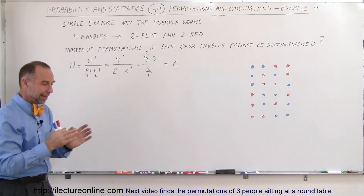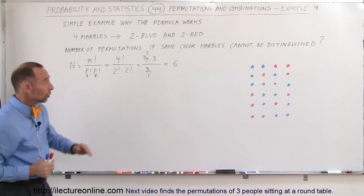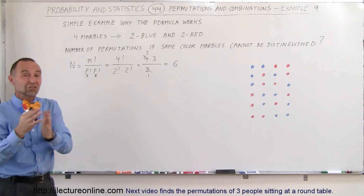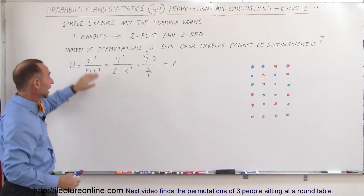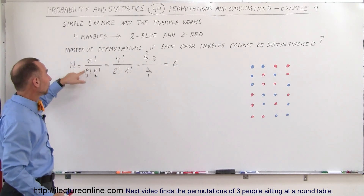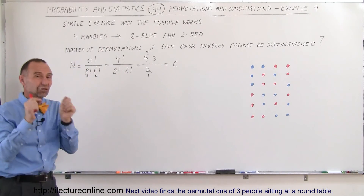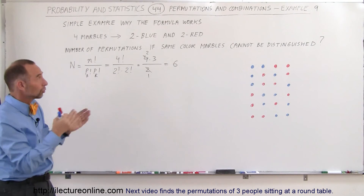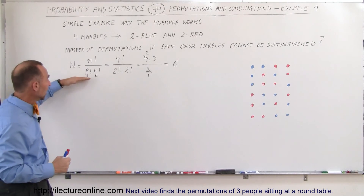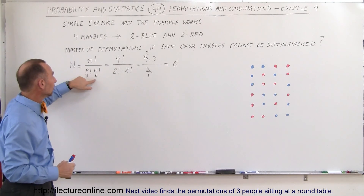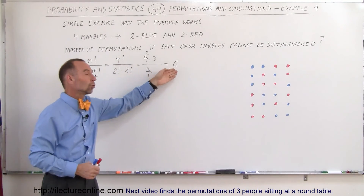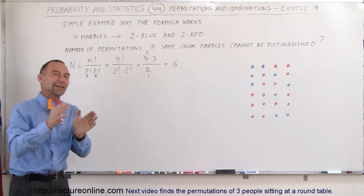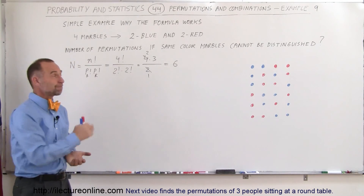So we have a number of things and we have groups of them that we cannot distinguish between. The number of permutations is simply n factorial — n for the number of things that you have, in this case marbles — divided by the number of permutations for each color separately. So if it's two blues, it's 2 factorial; three blues, 3 factorial; four blues, 4 factorial, and so forth. You multiply those permutations and put them in the denominator. The ratio gives you the total number of permutations if the colors of the same type cannot be distinguished.